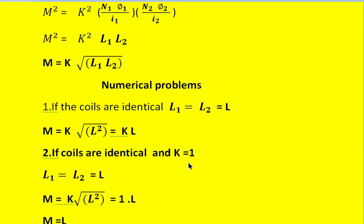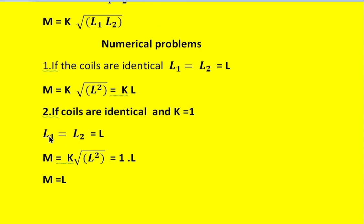If the coils are identical and k equals 1, then with L1 equals L2 equals L and k equals 1, the formula M equals k times the square root of L1 L2 gives M equals 1 times the square root of L squared, which equals L. This indicates that mutual inductance equals self inductance for two identical coils, provided the coupling coefficient is unity.